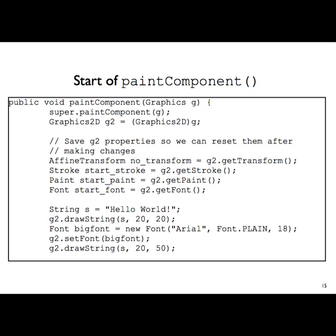There's a method within the Graphics2D class called drawString. We can draw it using the default font at a certain position — just the string and then where it goes.